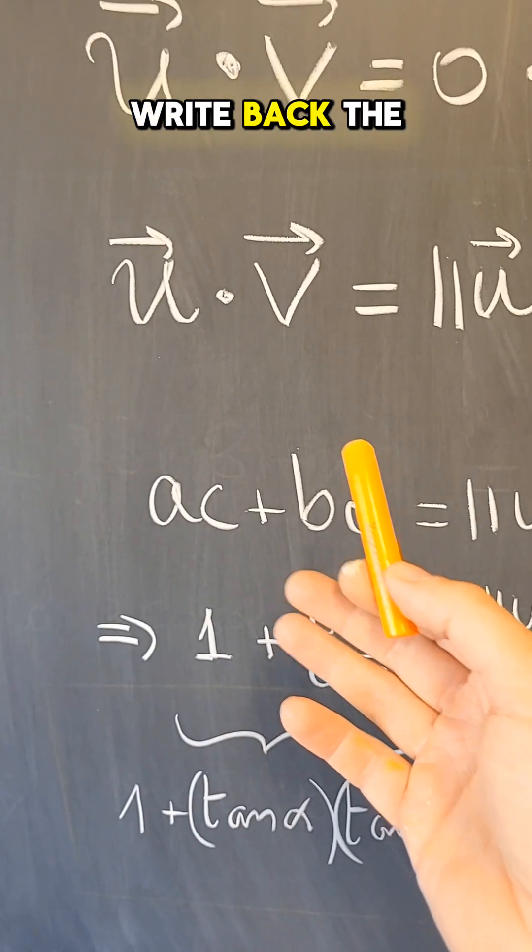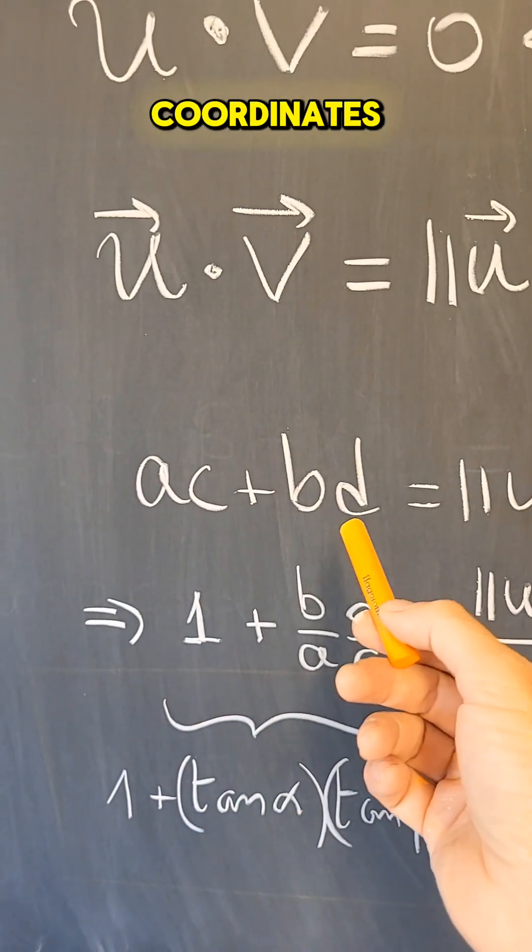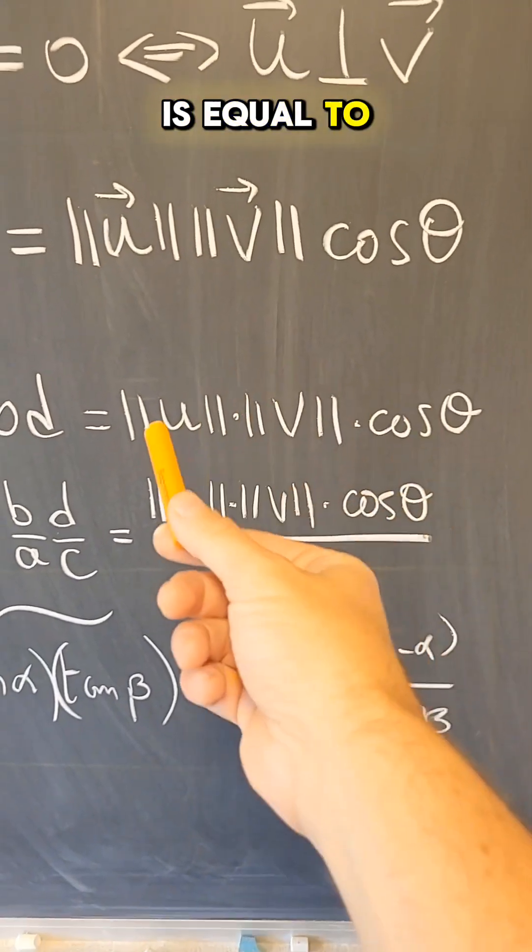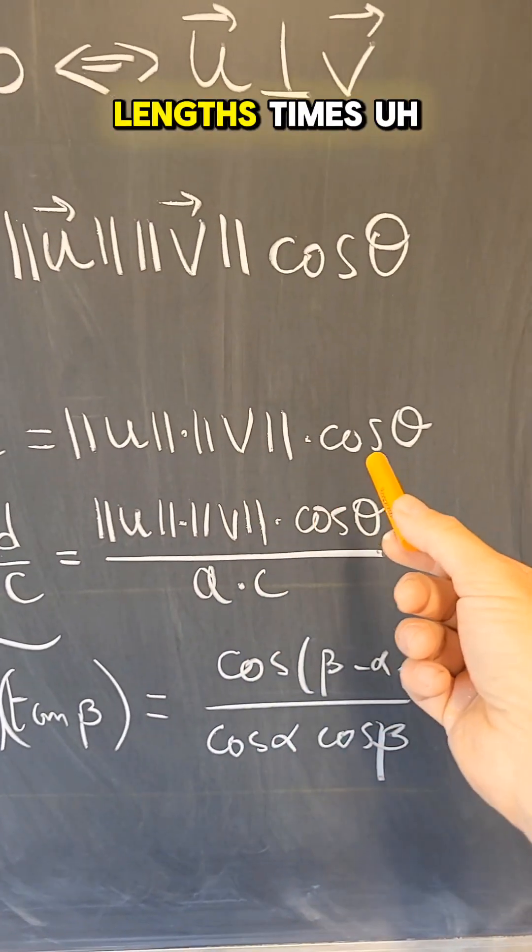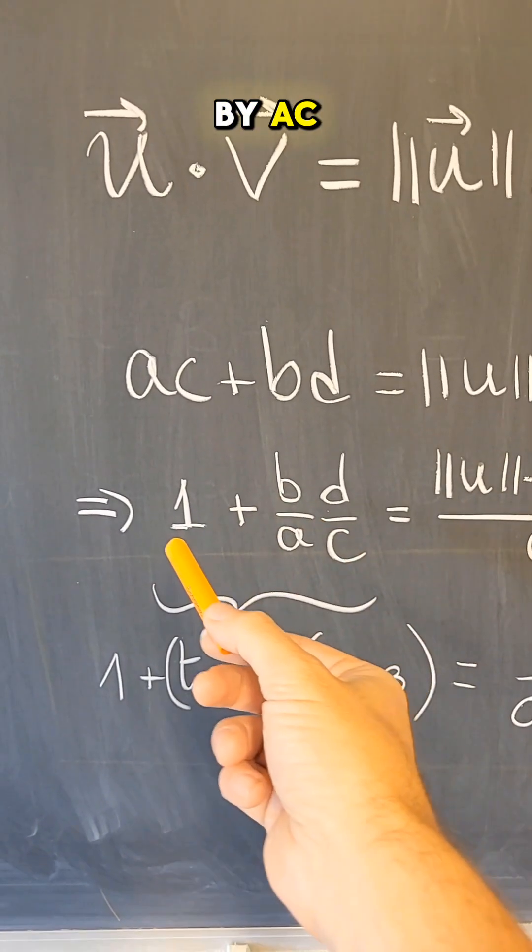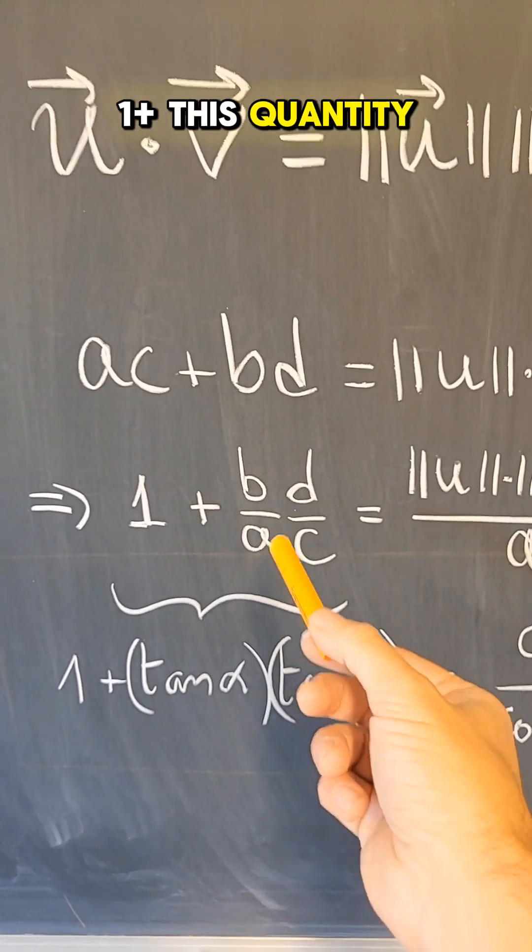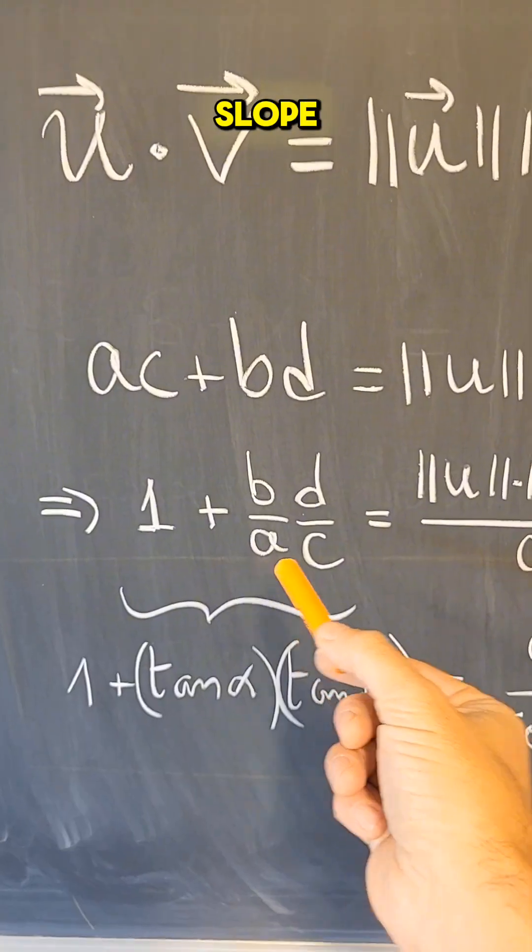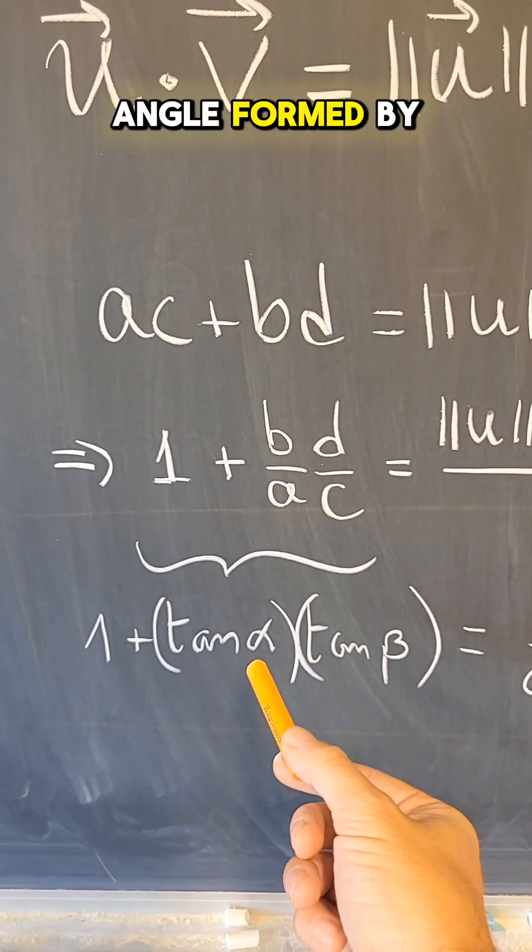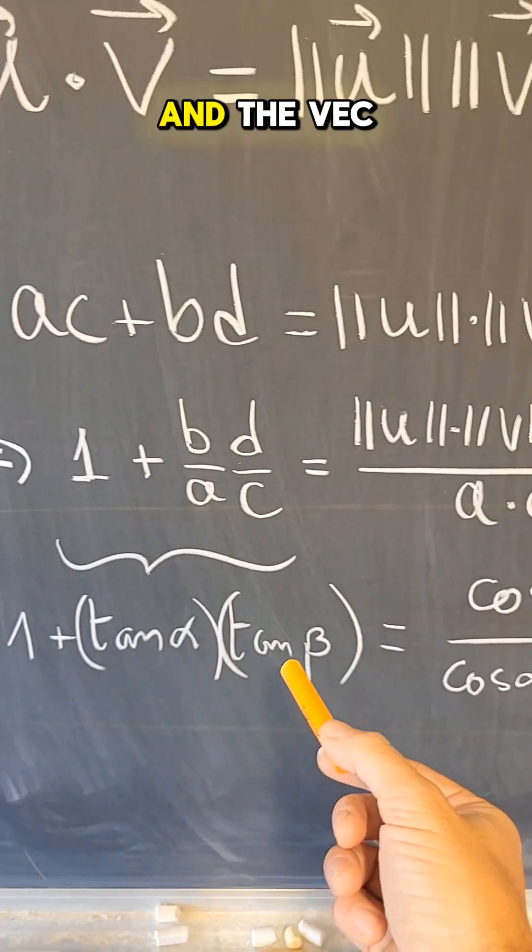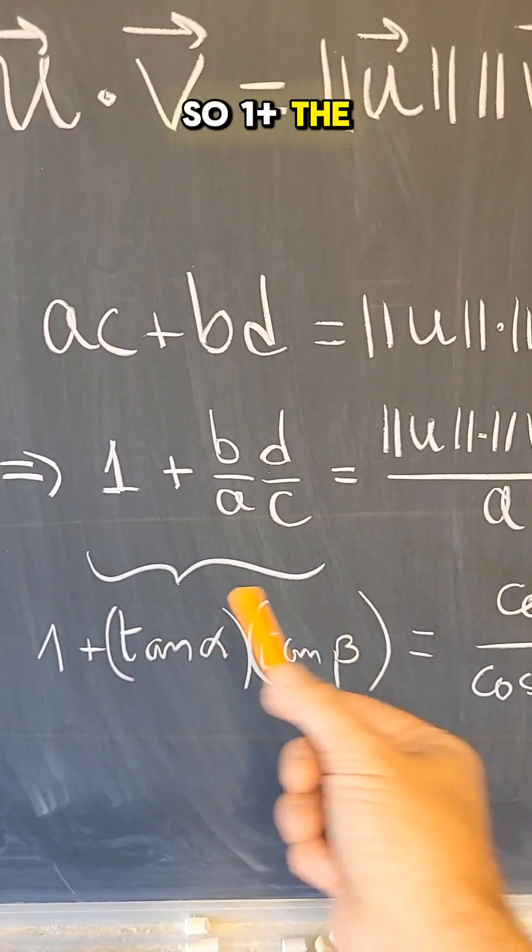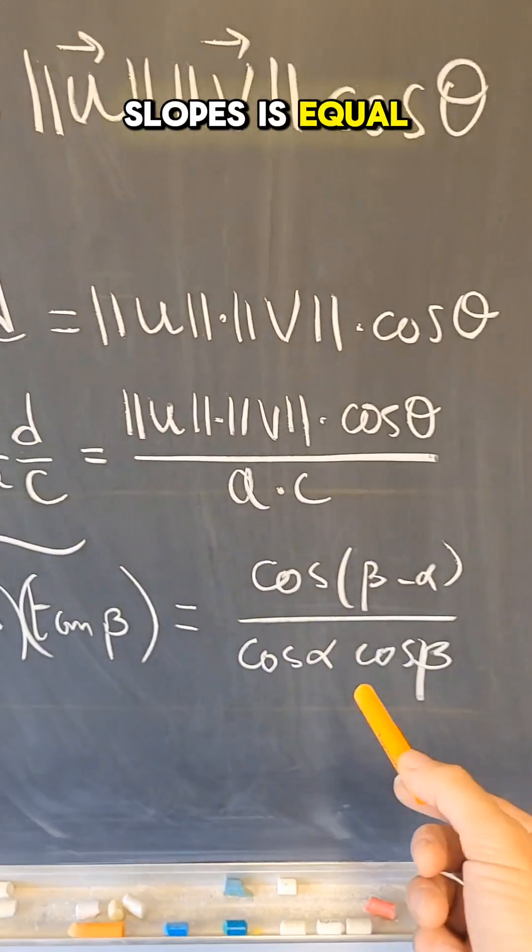So if we write back the dot product in coordinates, then I get that this quantity is equal to some product of lengths times cosine of an angle. And if I divide through by ac, then I get 1 plus this quantity. But this quantity here is a slope, and this is a slope. So these are tangents of the angle formed by the vector u and the angle formed by the vector v.